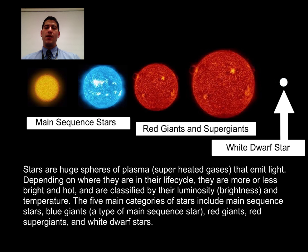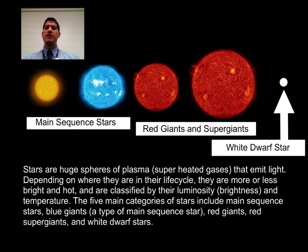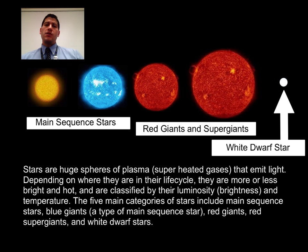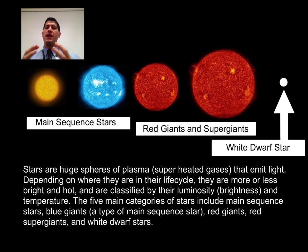You probably already know that a star is essentially a giant ball of burning gas, or what scientists call plasma, which is the fourth and most abundant state of matter in the universe. The other three states of matter you're well aware of: solids, liquids, and gases. Stars are held together by their own gravity, and are the element factories of the universe.